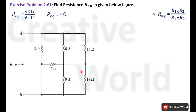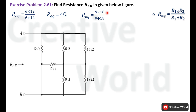Similarly, we calculate the equivalent resistance of the second parallel pair. R1 is 9 ohm and R2 is 18 ohm. Placing values into the formula: 9 multiplied by 18 divided by 9 plus 18. The product of 9 and 18 is 162 and the sum is 27. Dividing 162 by 27 gives 6 ohm.